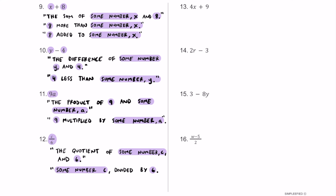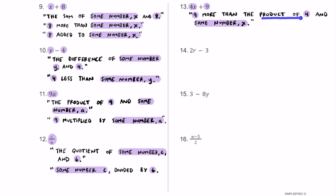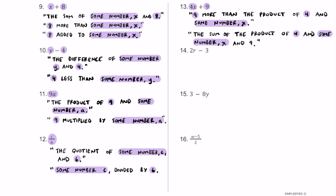For number thirteen, we have 4x plus nine. We have two operations: four being multiplied by x, and then adding nine. A great verbal sentence is: nine more than the product of four and some number x. This works because we're adding nine at the end, and 4x means the product of four and x. A wordier option: the sum of the product of four and some number x, and nine.